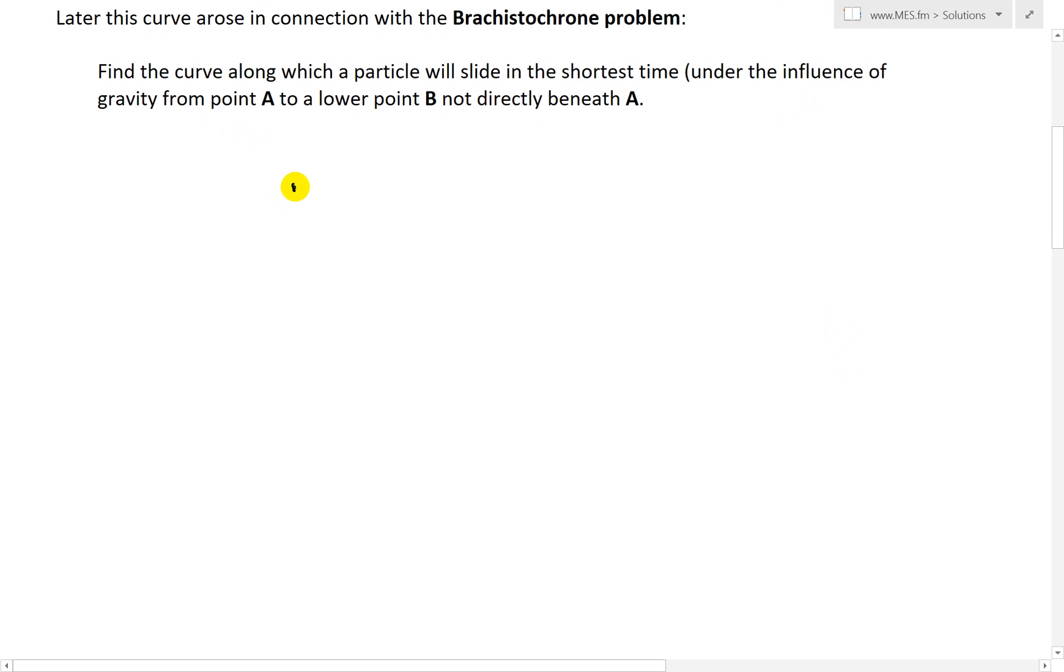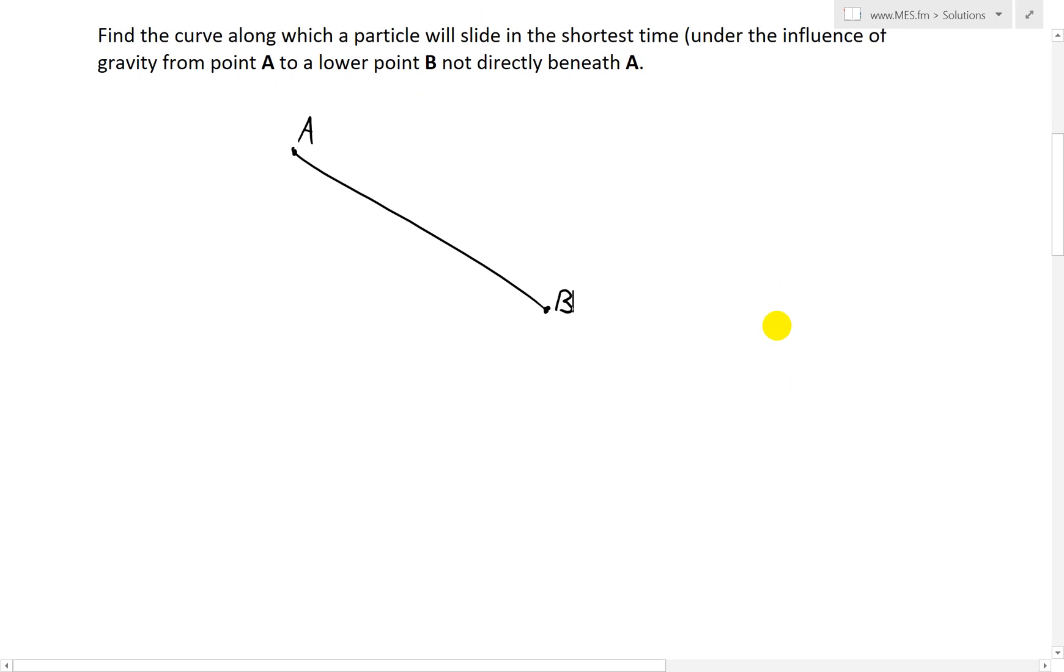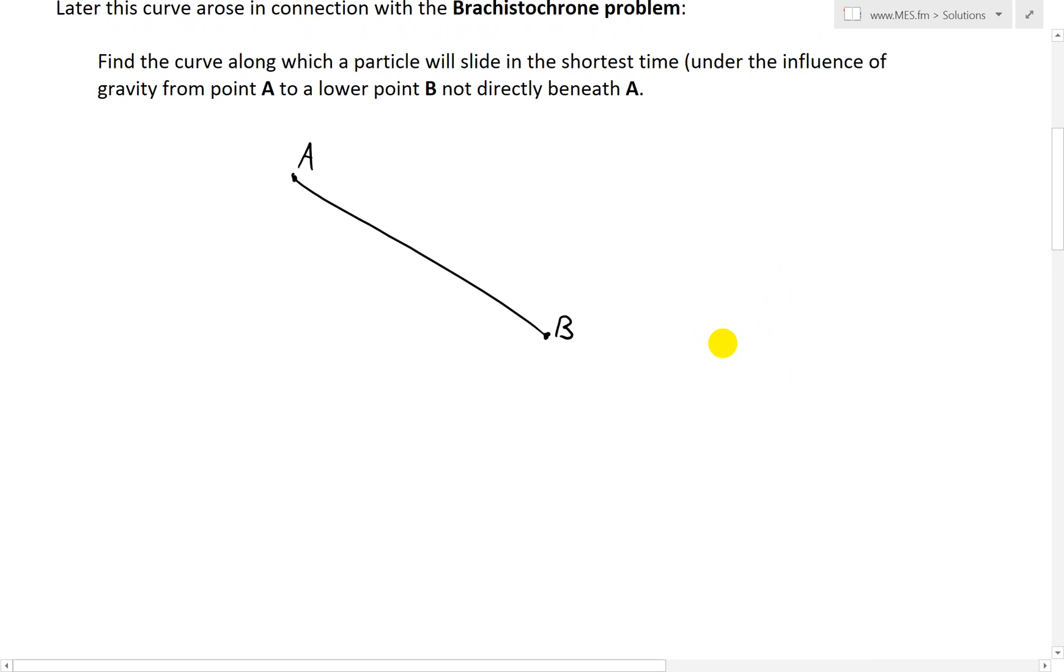So if you had, say, point A like this, and then if you draw a line across all the way to point B, that's not directly below it. Now the part of the problem is stating, basically draw a curve that if you were to drop a particle or a ball to see what will take the shortest time to reach B, what kind of curve would it be? For example, you could have a curve like this or a curve such as this.